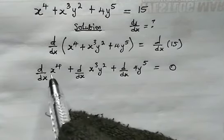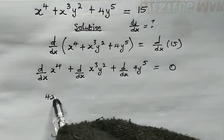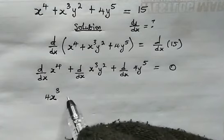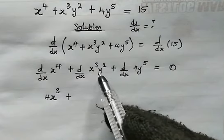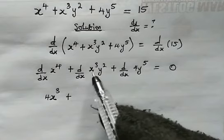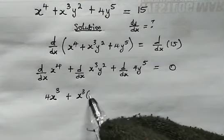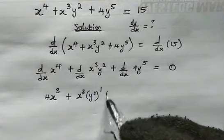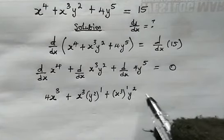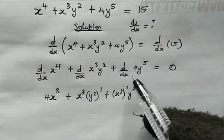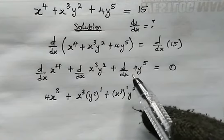From here, we know our normal derivative. The derivative of x to the power of 4 with respect to x is 4x to the power of 4 minus 1, which is 3. Then plus, from here we're going to make use of the product rule. This is going to be equal to x cubed multiplied by y squared prime, then plus x cubed prime multiplied by y squared.